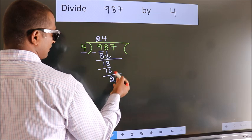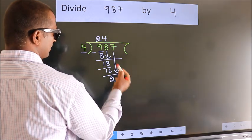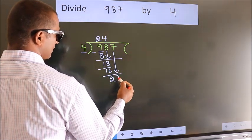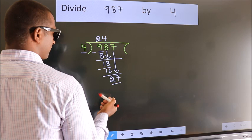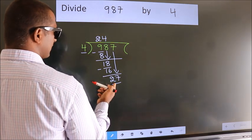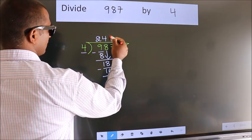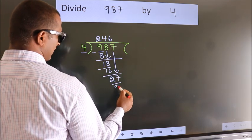After this, bring down the next number. So, 7 down, giving us 27. A number close to 27 in the 4 table is 4 times 6, which is 24.